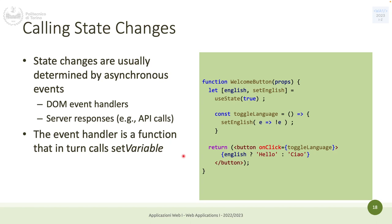Always use setState to update the state. State changes typically happen asynchronously through event handlers — someone clicks a button, someone types in an input, you receive new data from a server. You need to change something in the state, update the table or the information. For instance, onclick links to a toggleLanguage function, which calls setEnglish with an arrow function to just revert the state.